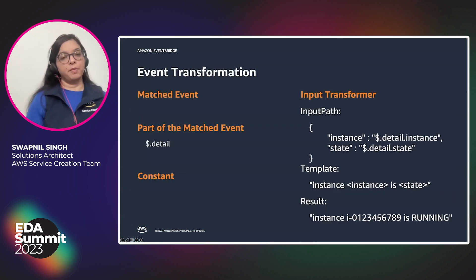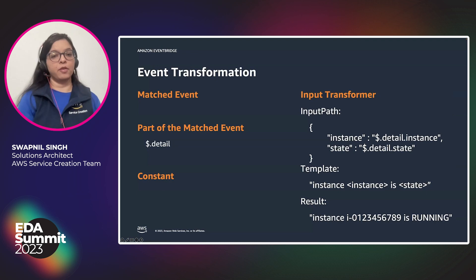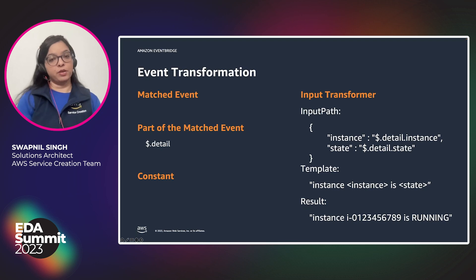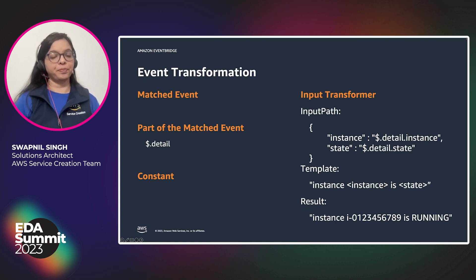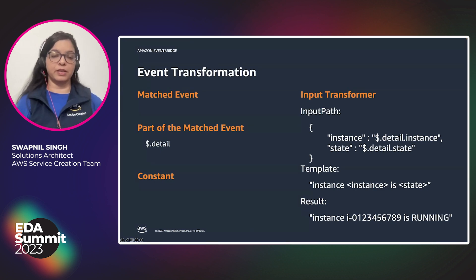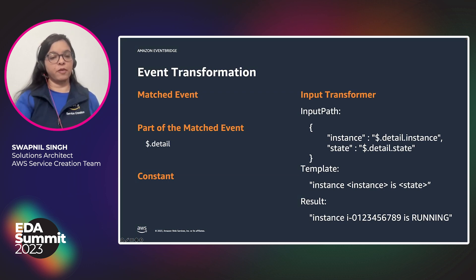In addition to routing events through event rules, EventBridge also allows you to transform events while forwarding them. You can send an event if it completely matches the rule, or send just part of the matched event. You can also use an input transformer to edit and change the event slightly before sending it forward. In some cases, you can also send a constant value forward.